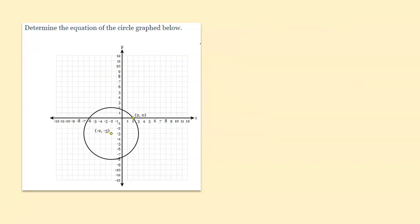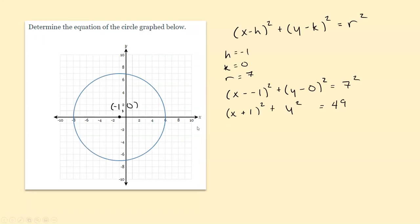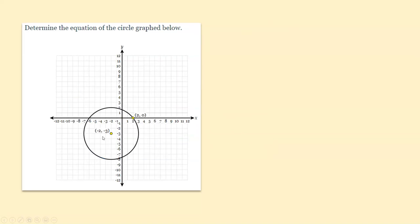Now let's look at the next example. Unlike the last one where we could count the radius, what if we have one where we can't? Notice that this point right here isn't quite on the grid line — it's a little bit off. The point they give us is 2 comma 0, and we can't count boxes there because we're going diagonally — we're not actually going by units. So how do we figure out the radius?